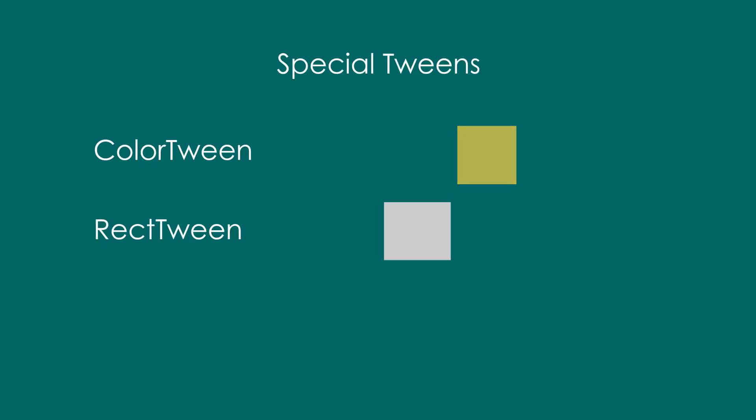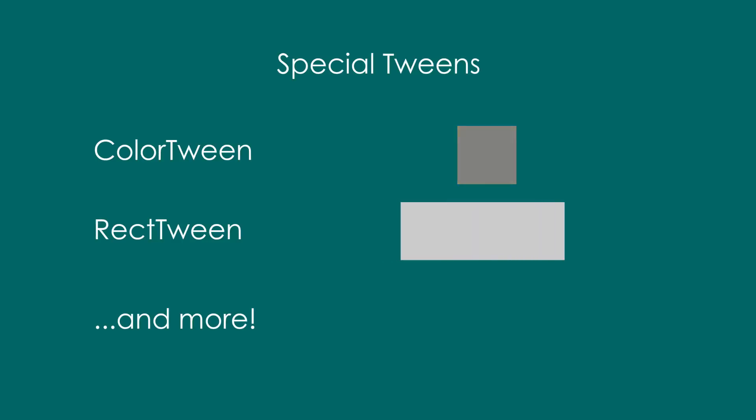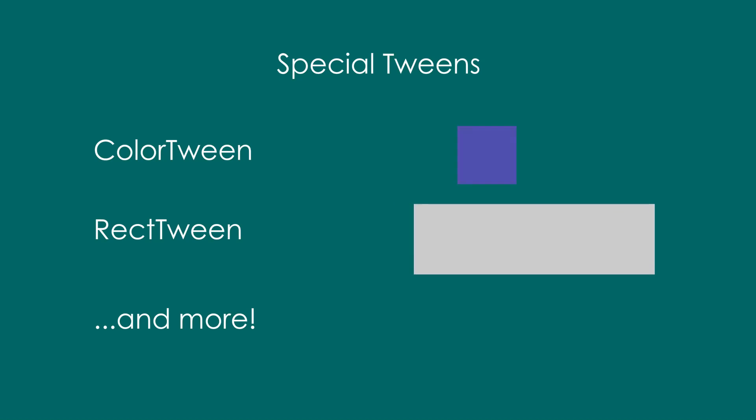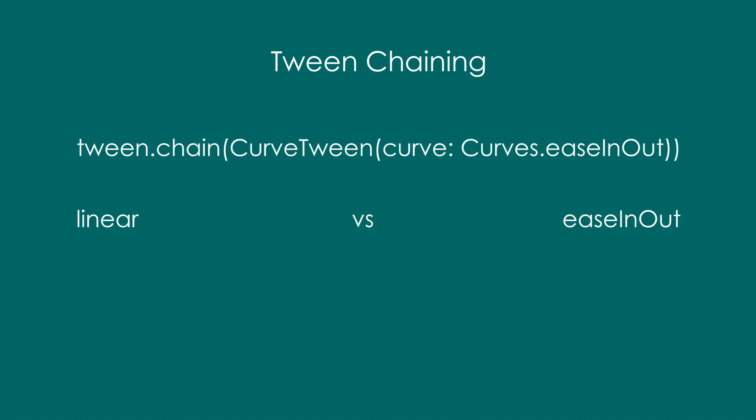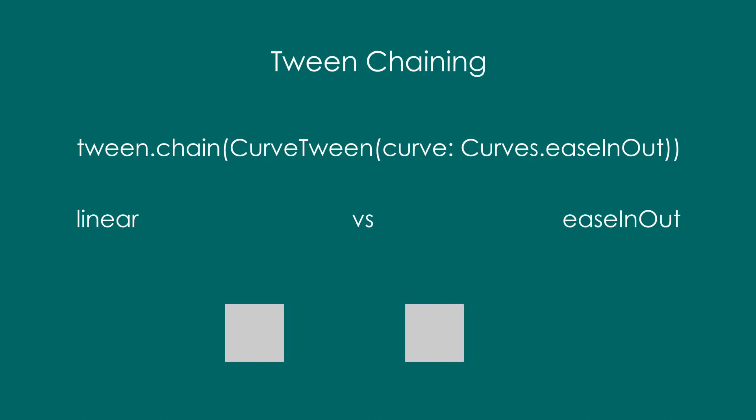There are also specific tween classes like ColorTween or RectTween for dealing with the respective kinds of values. We can chain a tween to another — for example, to add a curve to a tween, we can use the chain function and pass in the CurvedAnimation with the required curve.